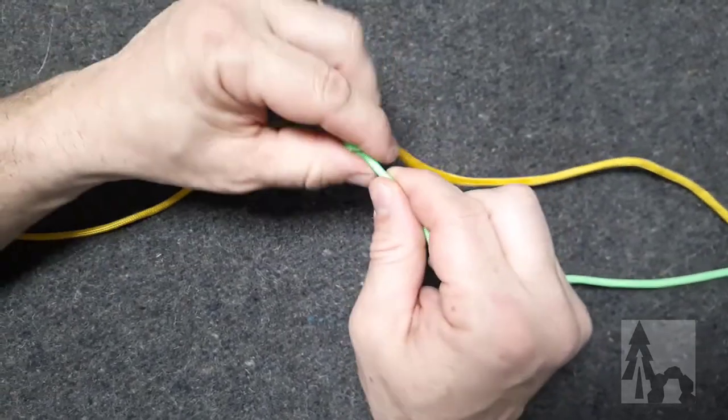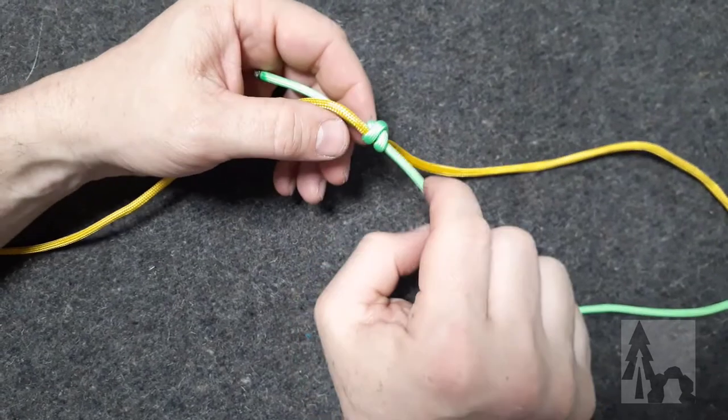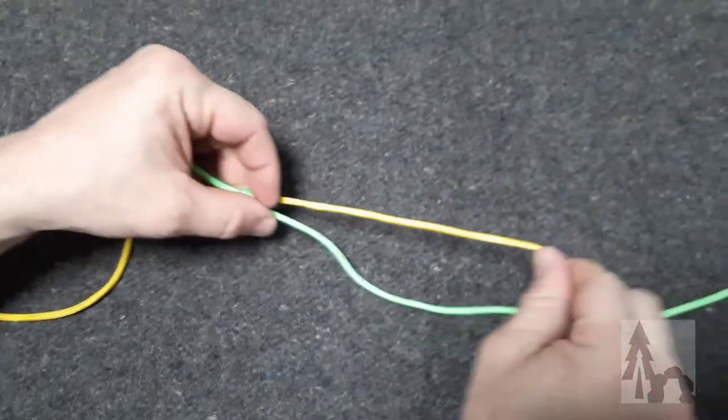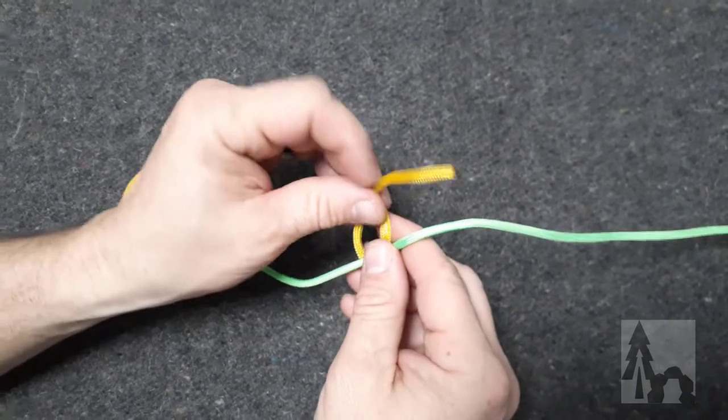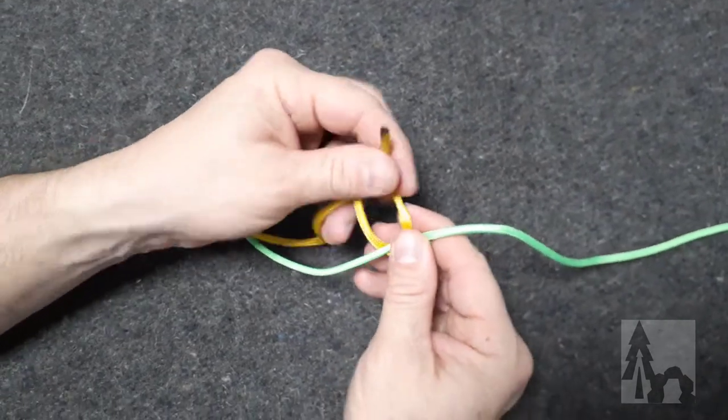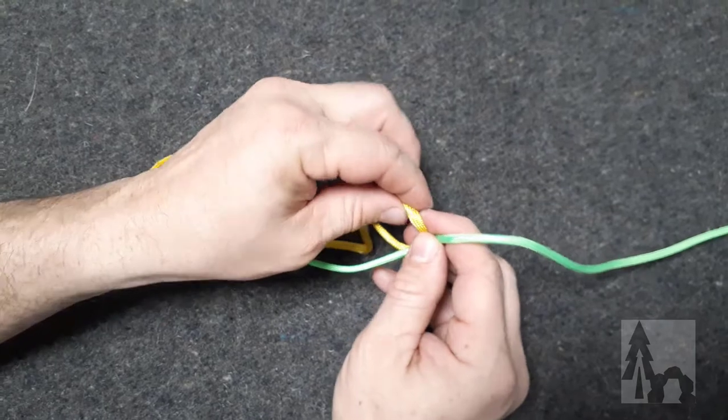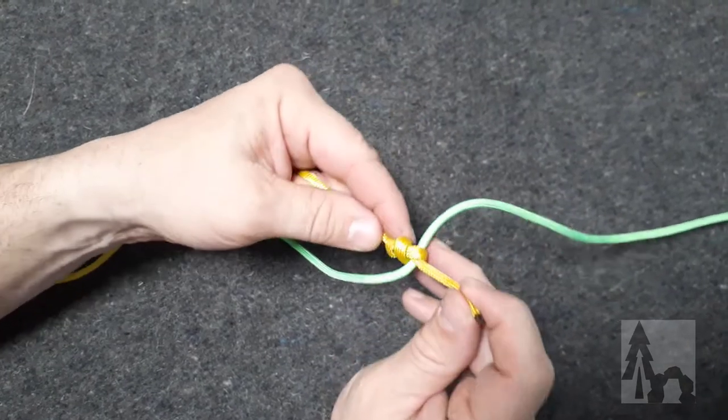Now when that knot's pulled down, I've got a double overhand or a blood knot around the yellow. And I do the same thing over here. I cross around, I make my overhand knot, and then I go through again to make my double overhand knot.